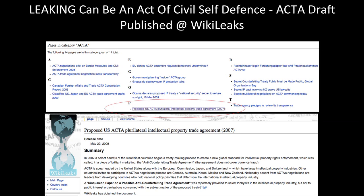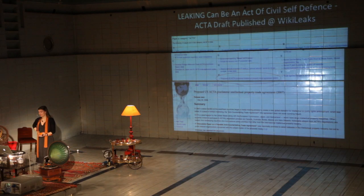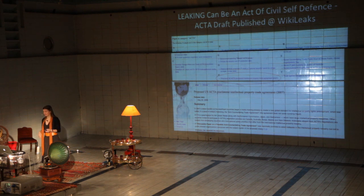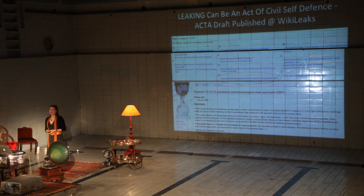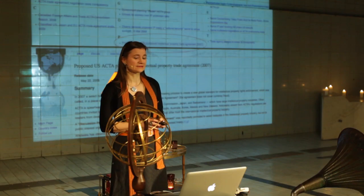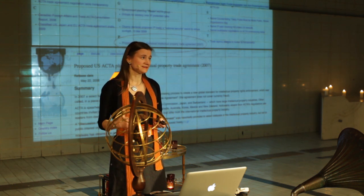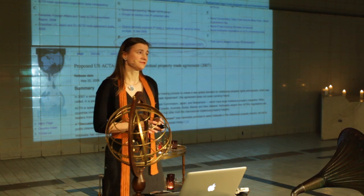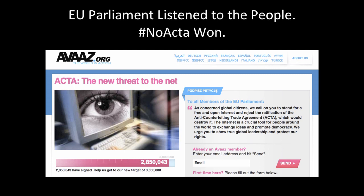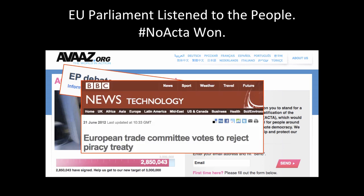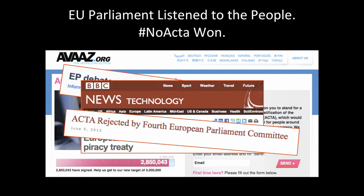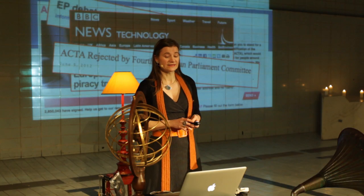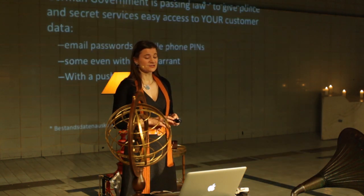We can defend our interests. Sometimes we have to create transparency bottom-up. One way of doing it is leaking. The biggest leak in history was just now with the offshore leaks. In 2008, the draft for the ACTA legislation was leaked to WikiLeaks, and it helped us mobilize globally and eventually successfully prevent a really stupid law that would have censored our internet. The AVAAZ platform collected more than 2 million signatures, which were given to the European Parliament — and only then did the EU Parliament start to think twice and change their decisions.